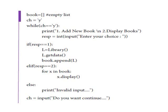We use a while loop with character equal to 'y'. Inside the loop, we print a menu with option 1 for add new book and option 2 for display books.